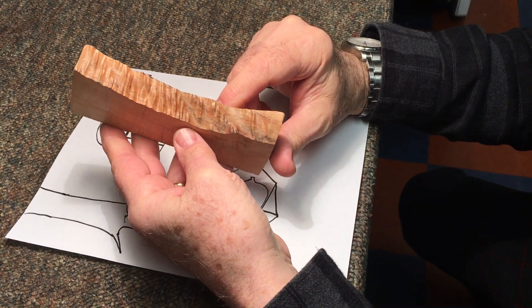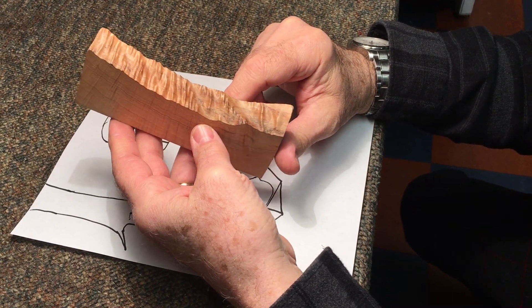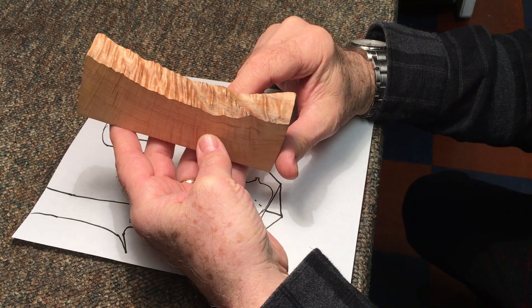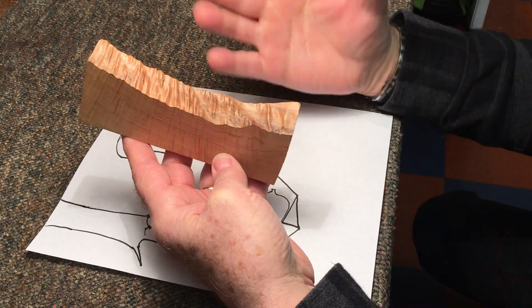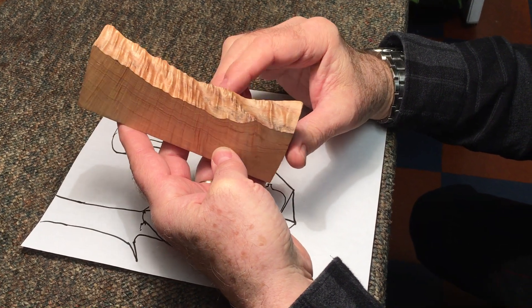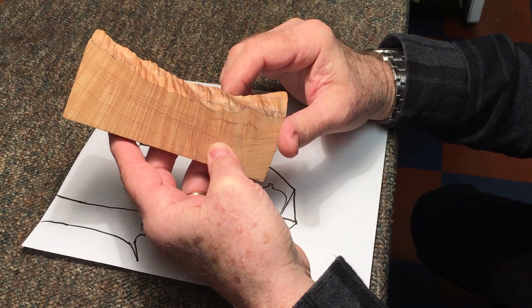People ask, why do we use maple to make violins? Everything on most violins is maple, except for the top and the fingerboard. But the body of the instrument's primarily maple with a spruce top.